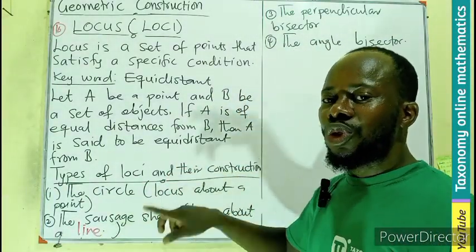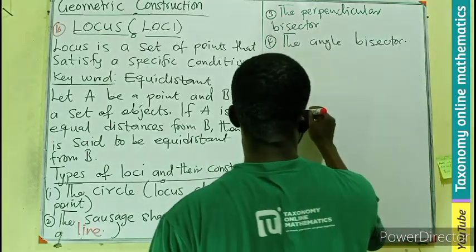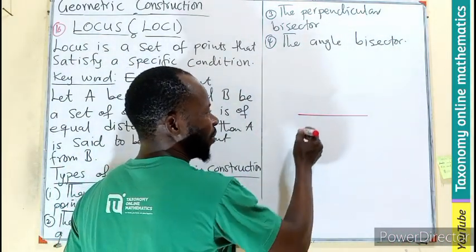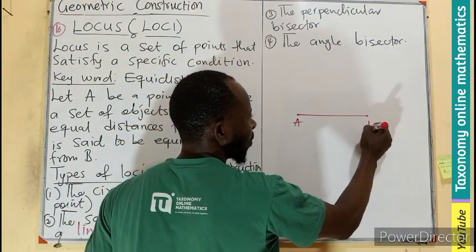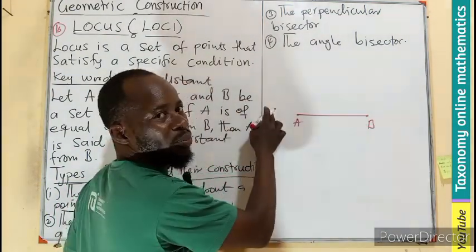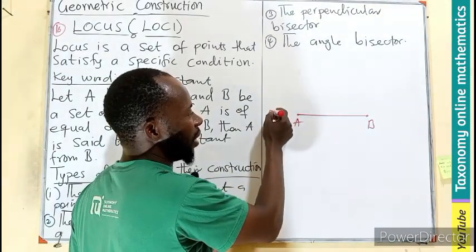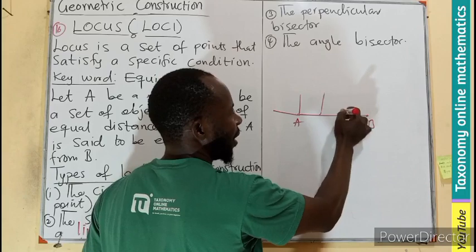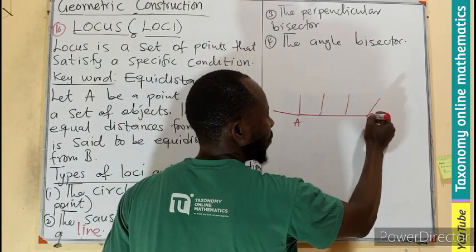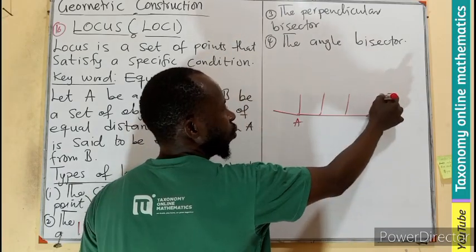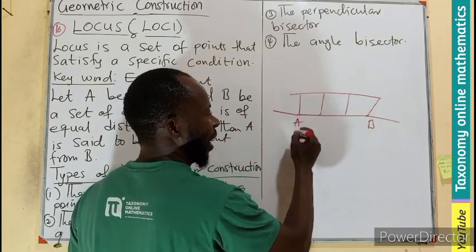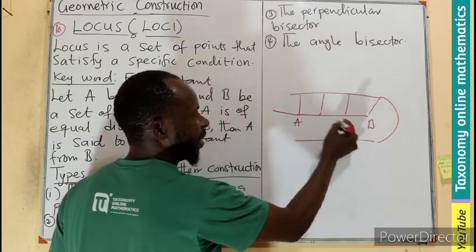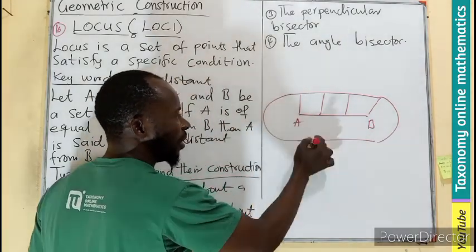Then about a line shows the sausage shape. So if I have this as a locus, if the distance between A and a certain point is three centimeters, meaning from here will be three centimeters all around the line. So if I draw this, it will be a straight line, below it, a straight line, this will be three centimeters, then this will also be three centimeters.